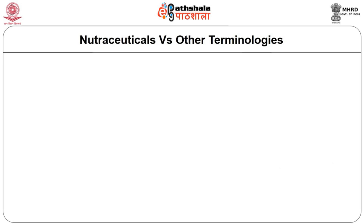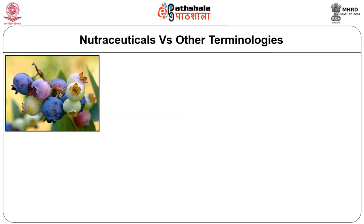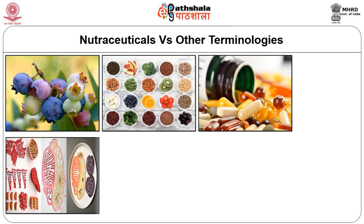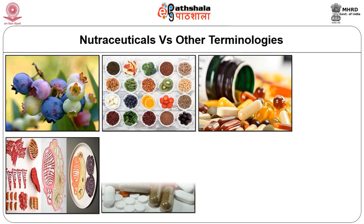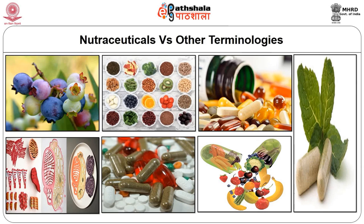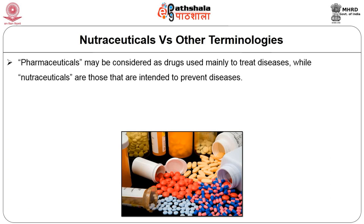How is the term nutraceutical linked with other related terminologies? A lot of confusion exists regarding terms like nutraceuticals, functional foods, dietary supplements, designer foods, medical foods, pharma foods and phytochemicals. But the meaning is essentially the same. Pharmaceuticals may be considered as drugs used to treat diseases, while nutraceuticals are those intended to prevent diseases — this is the major difference.